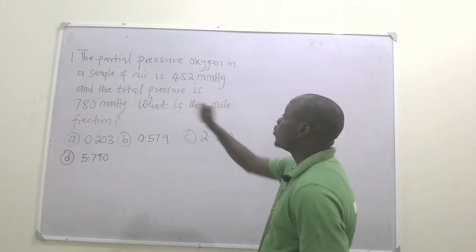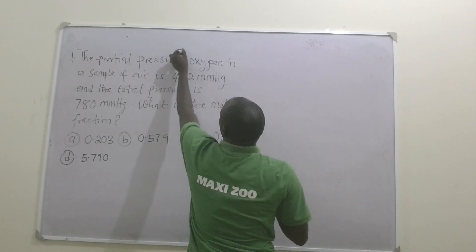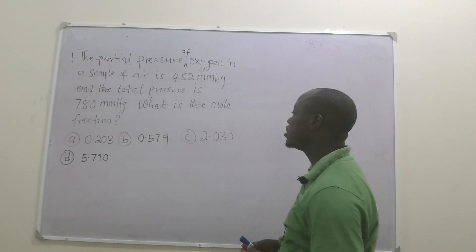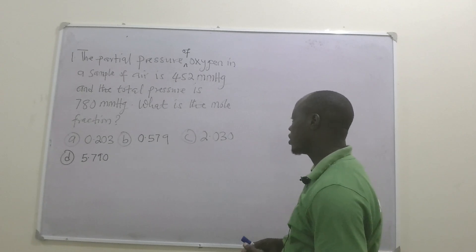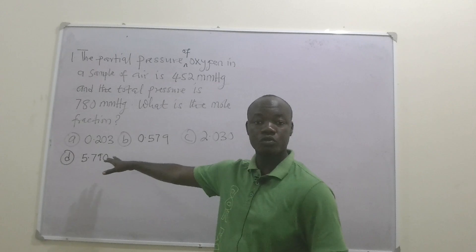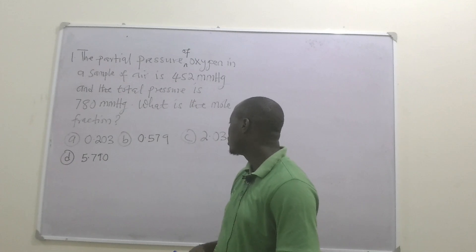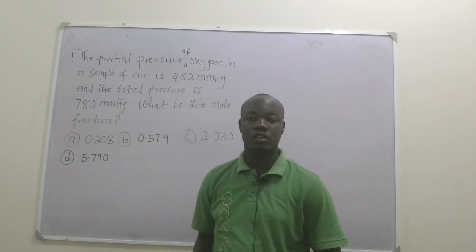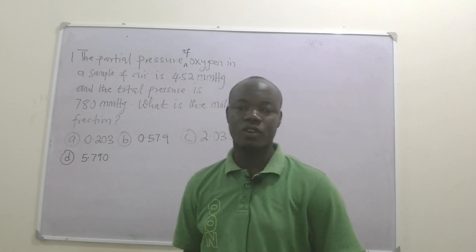The first question is: the partial pressure of oxygen in a sample of air is 452 millimeters of mercury, and the total pressure is 780 millimeters of mercury. What is the mole fraction? Option A is 0.230, option B is 0.579, option C is 2.030, and option D is 5.70.